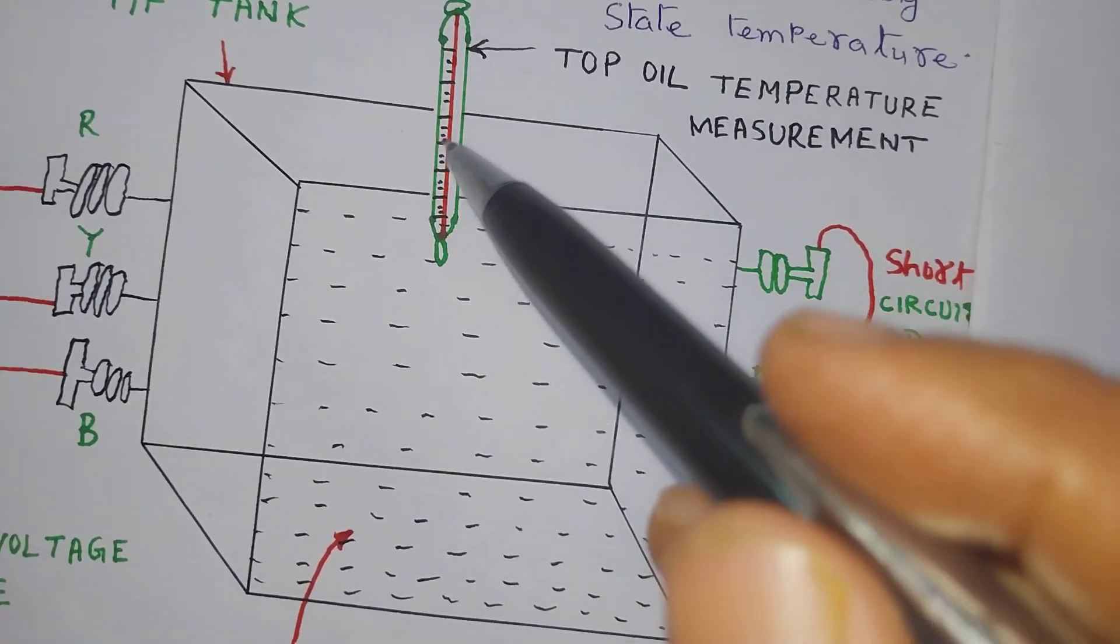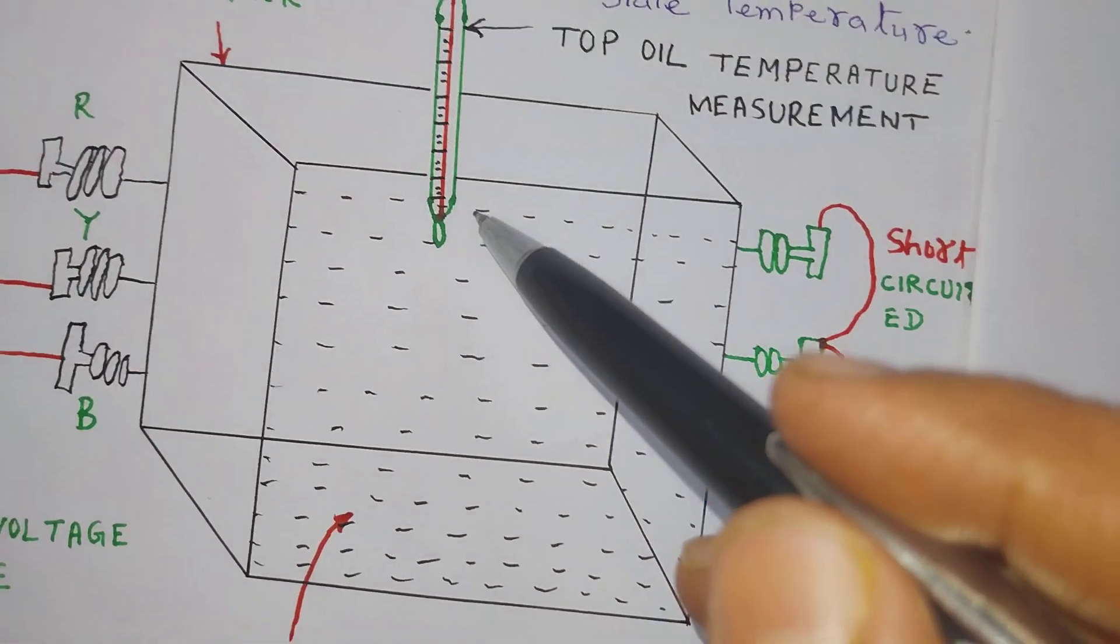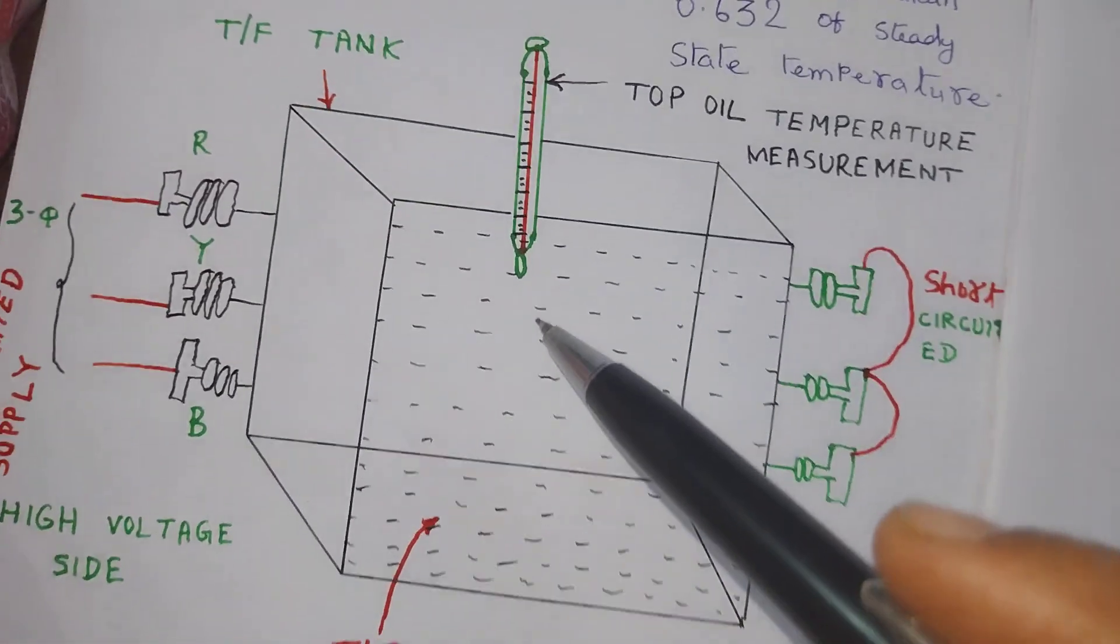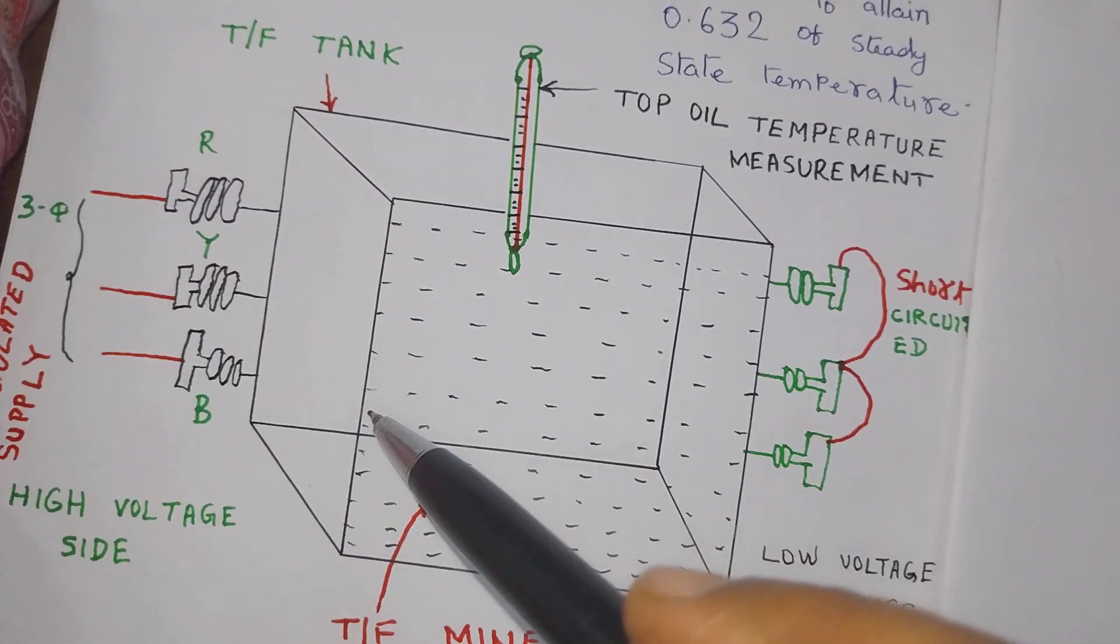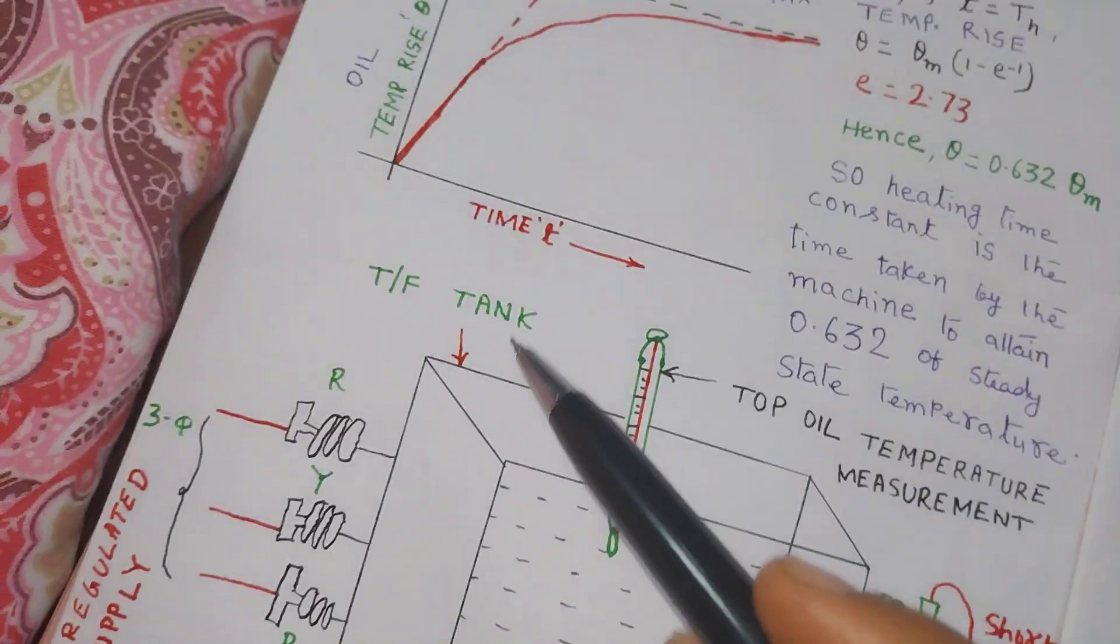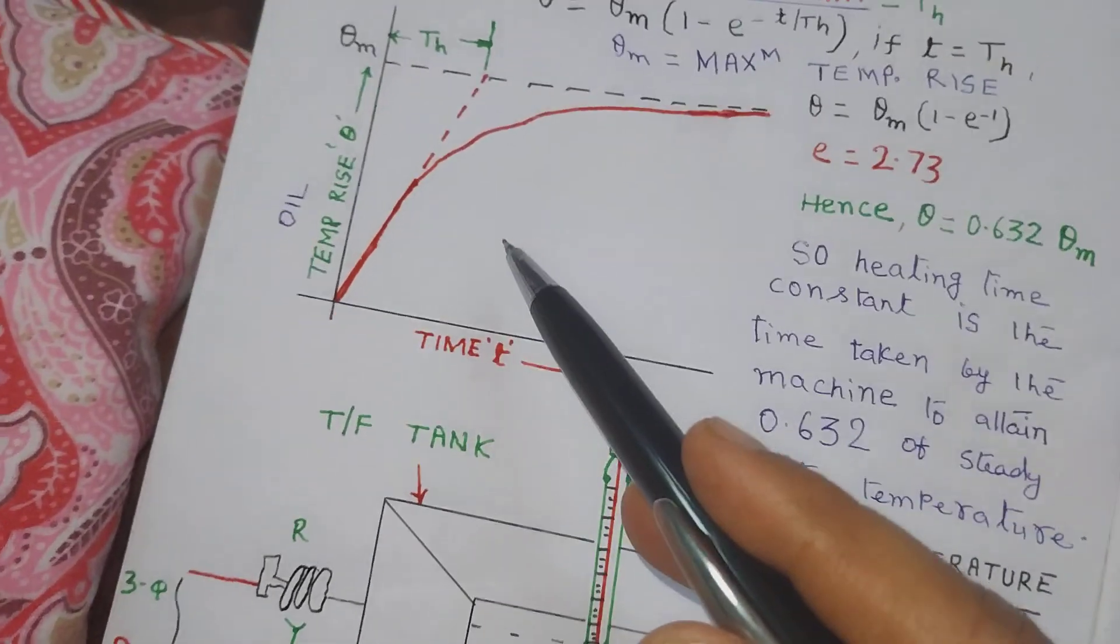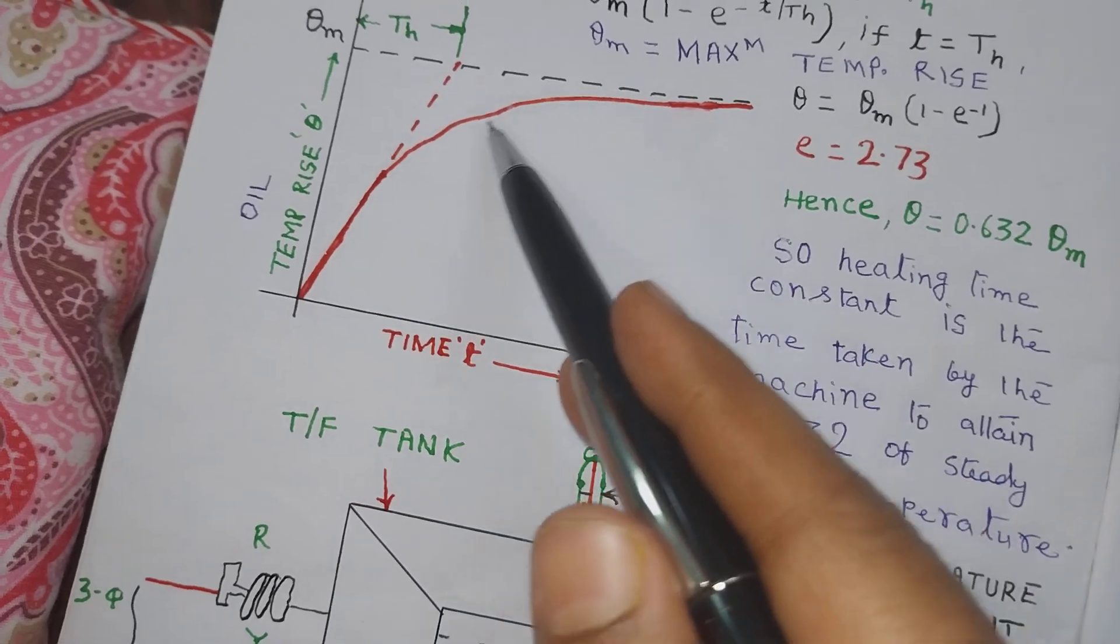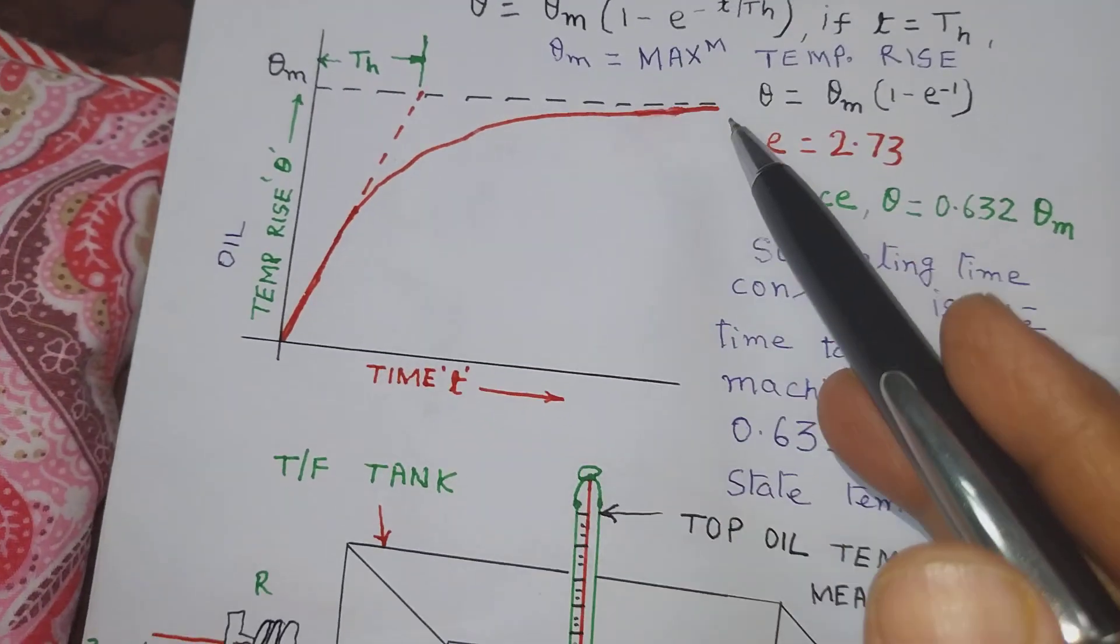These two thermometer readings are taken every hour. So you will find that in the first hour this is very high, and as the time passes the curve becomes flat.